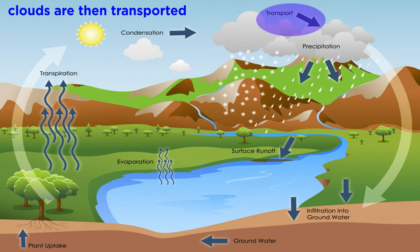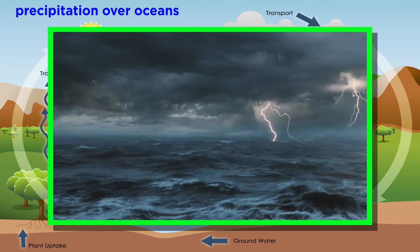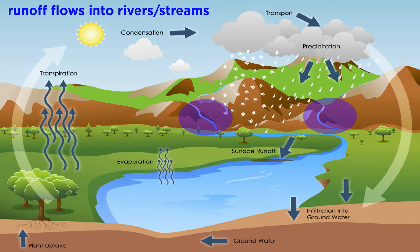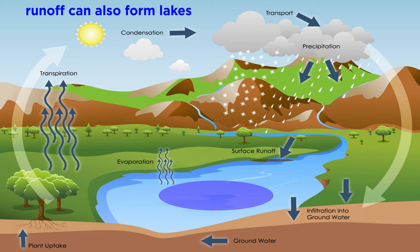Air currents move clouds around the globe, and eventually cloud particles collide, grow, and fall out of the sky as rain, snow, or hail, known collectively as precipitation. Most precipitation falls back into the oceans. The precipitation that lands on the earth's surface flows away from where it lands as runoff due to gravity. A portion enters rivers and streams which eventually flow into the ocean, but the rest of the runoff and groundwater seepage can accumulate and get stored as freshwater in lakes.